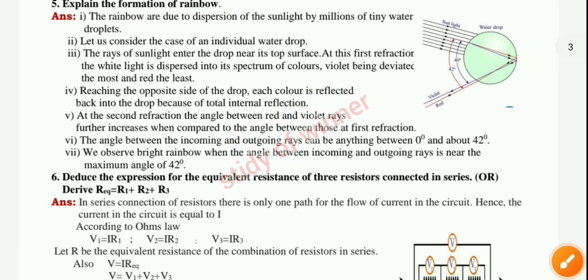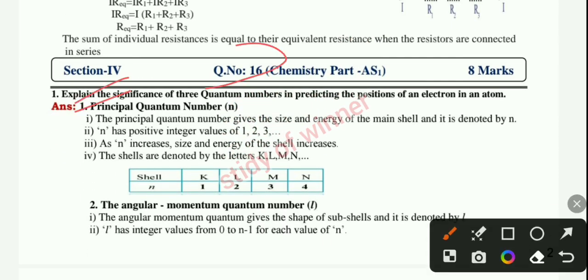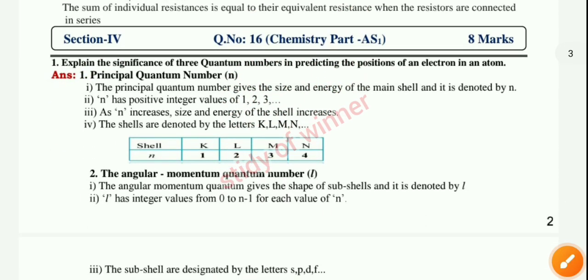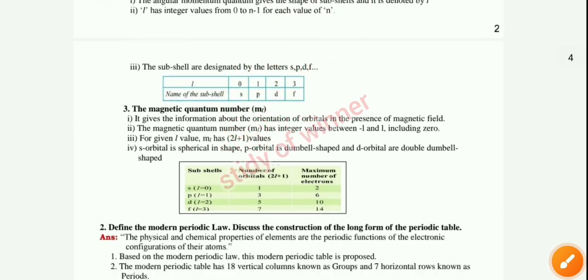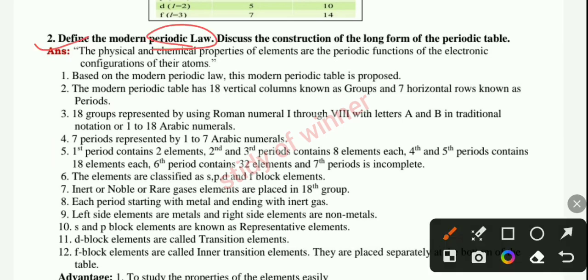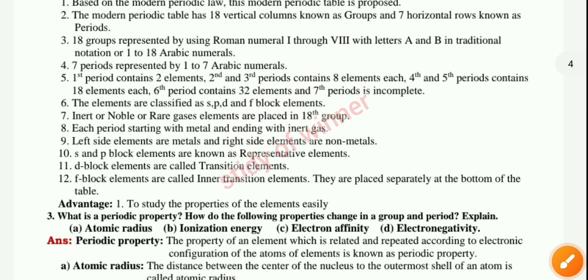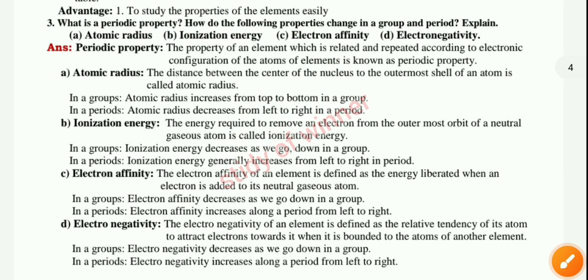Next, question six. Now you can see Section 4 with 16 important questions. The second question: define the modern periodic law. Third question: what is periodic property and how do properties change in a group and period — explained. You can see the answers for these questions.